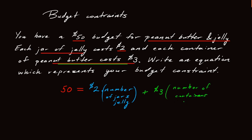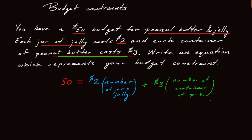Now normally we use variables for these. So maybe J for jelly. So instead of writing $50 equals two times number of jars of jelly, we just write 50 equals two times J for the number of jars of jelly plus three times P for the number of containers of peanut butter.